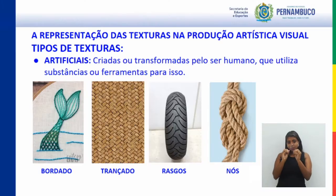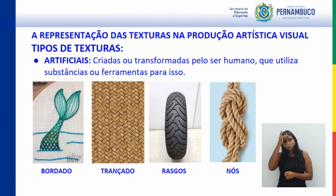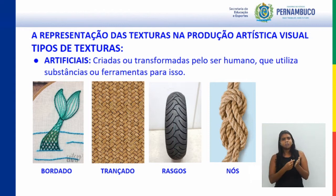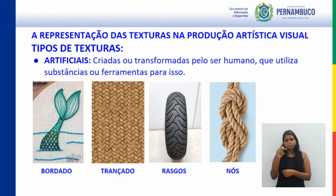As texturas artificiais são criadas ou transformadas pelo ser humano, que utiliza substâncias ou ferramentas para criar essas texturas. Como exemplo, temos o bordado, que é uma textura feita pelo ser humano através da técnica de bordar, usando objetos específicos como determinados tipos de agulha para realizar o bordado de linhas sobre um tecido. Temos também o trançado — na segunda imagem vocês estão vendo uma foto de um trançado de palha, que pode ser uma esteira, um cesto ou um abanador. Essa também é uma textura artificial, feita com as habilidades manuais do ser humano.